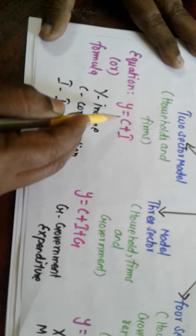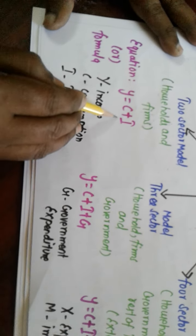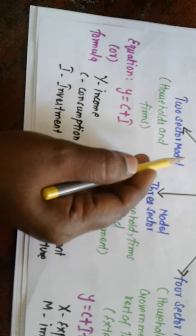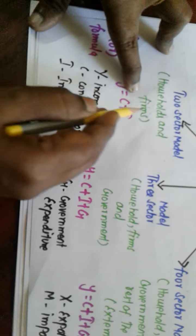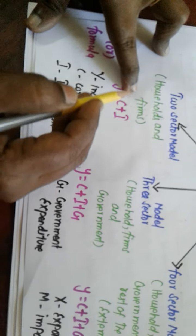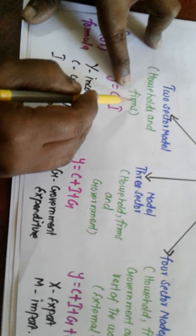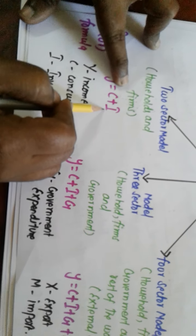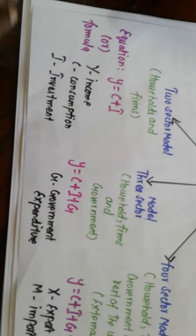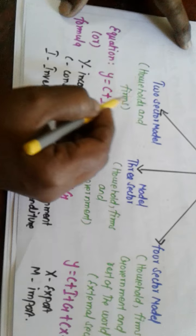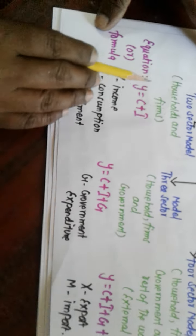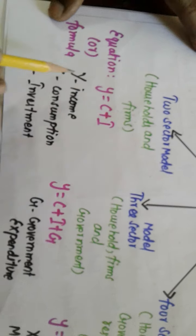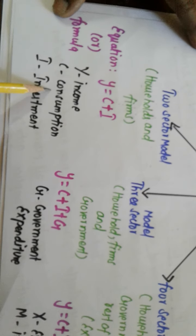The equation for the two-sector model is Y equals C plus I. In the two-sector model, the two components are household and firm. Household is referred to as C (consumption), and firm — since they are investing their money to carry out their business — is referred to as I (investment). The question may ask: what is the formula for the two-sector model? Y equals C plus I.